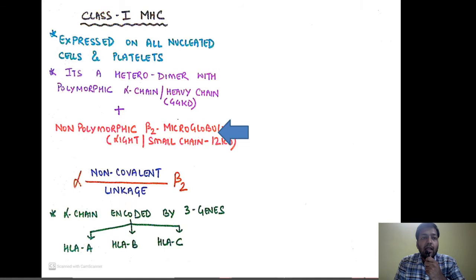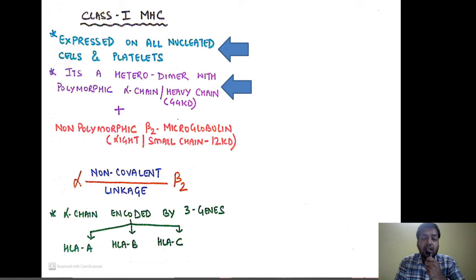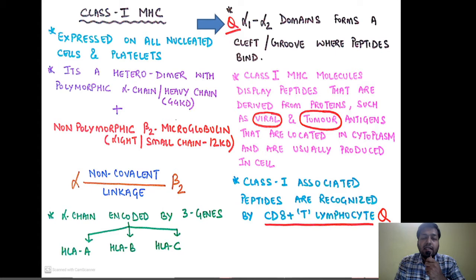Now let us read about class 1 MHC in detail. Class 1 MHC is expressed on all nucleated cells and platelets. It is a heterodimer — heterodimer because it is composed of two different kinds of chains. We have one polymorphic alpha chain — the heavy chain — and a non-polymorphic beta 2 microglobulin, which is the light chain. Both the alpha and beta 2 are linked by a non-covalent bond, and the alpha chain is encoded by three genes: HLA-A, B, and C.